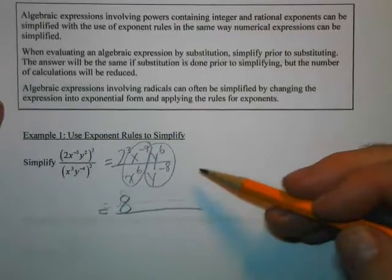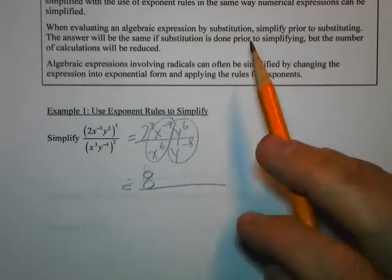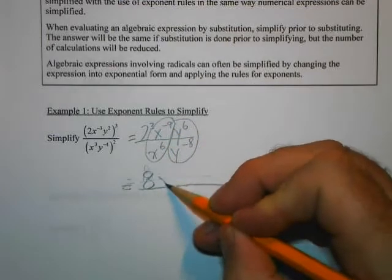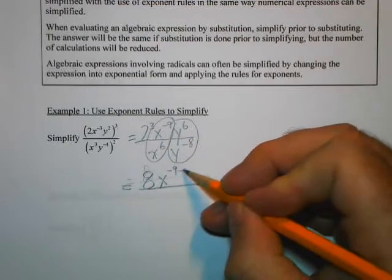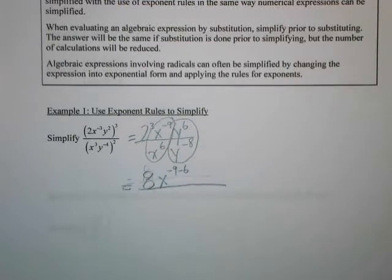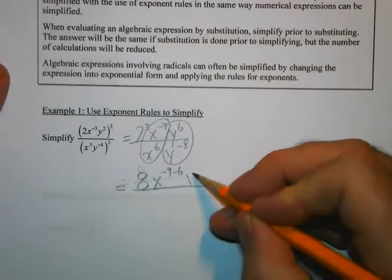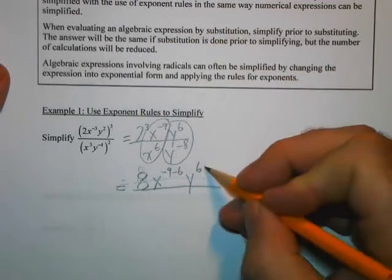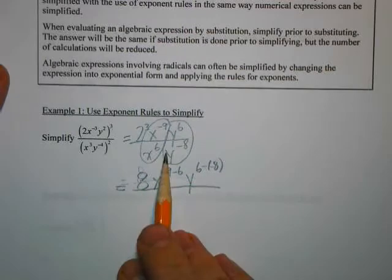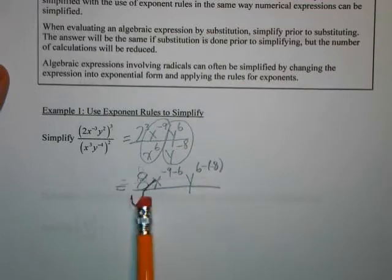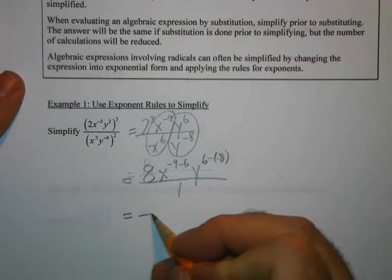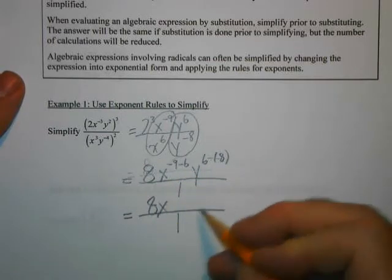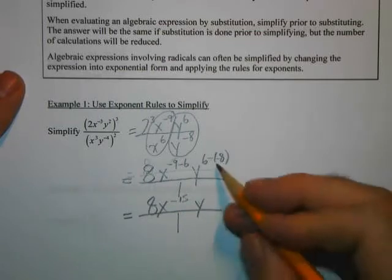I'm going to use the quotient rule here. For the x term, it's going to be x to the negative 9 minus 6. I've now taken care of the x to the 6 on the bottom. Then I'm going to combine the two y's — y to the power of 6 minus negative 8. Since I've already handled everything on the bottom, I'll put a 1 under it temporarily so the teacher doesn't think I forgot something. Combining those exponents, I get 8 times x to the negative 15, and y to the positive 14.